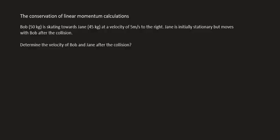In this question we have a person called Bob who is skating towards Jane at a velocity of 5 meters per second to the right. Jane is initially stationary but moves with Bob after the collision.